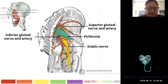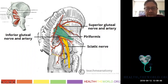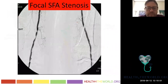Here's the piriformis, the inferior gluteal artery, and the persistent sciatic artery running adjacent to it, along with the sciatic nerve. The superior gluteal artery comes out above the piriformis at the roof of the greater sciatic foramen.